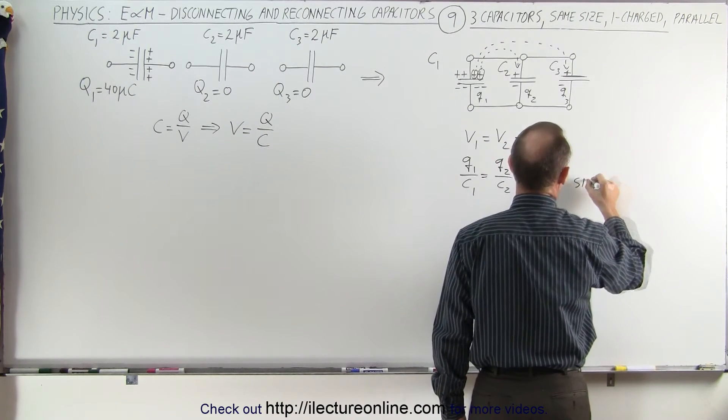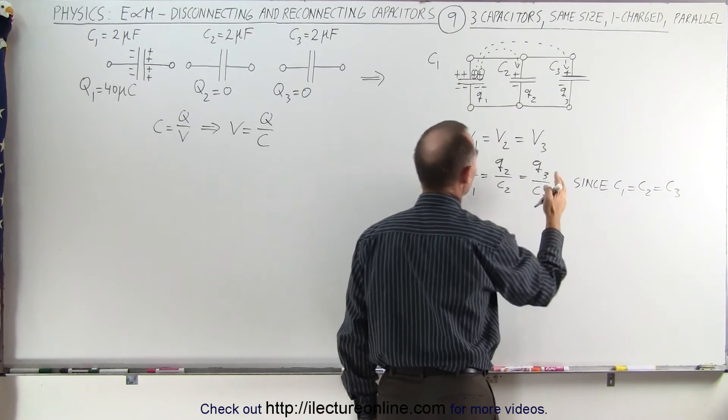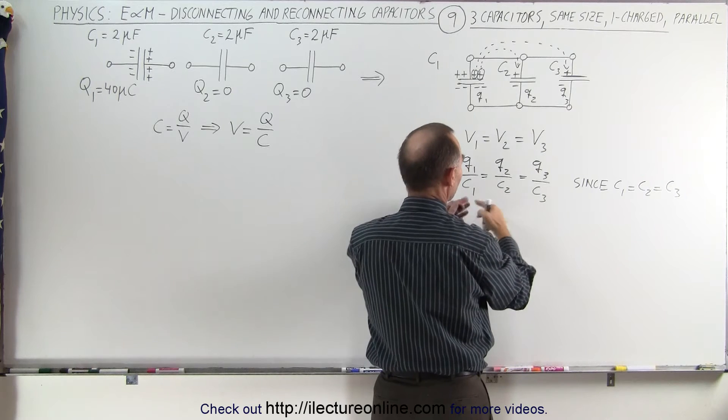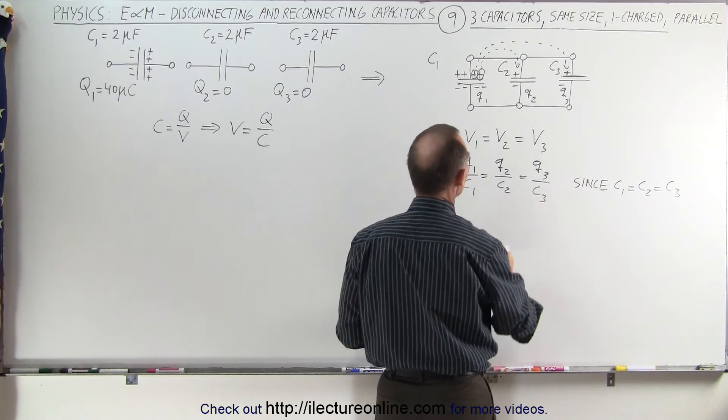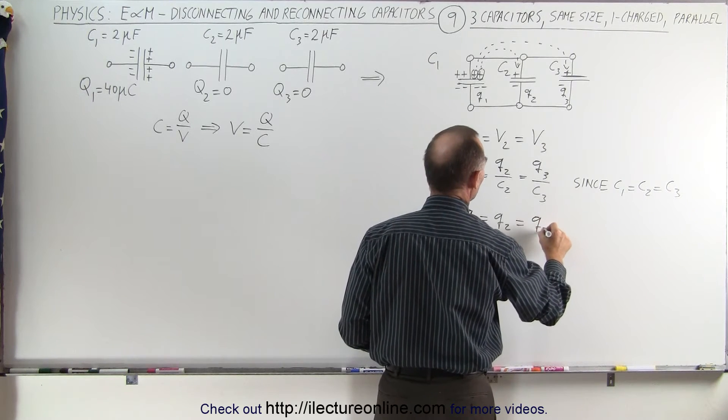Since C1 equals C2 equals C3, we can simply get rid of all the C1, C2, and C3 because they're all equal—we're dividing by the same number—which means that Q1 must equal Q2, which must equal Q3.